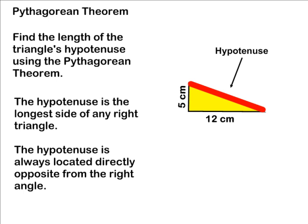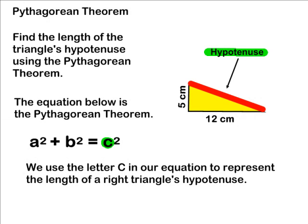The Pythagorean Theorem is represented by the equation a squared plus b squared is equivalent to c squared. We use the letter c in our equation to represent the length of a right triangle's hypotenuse.